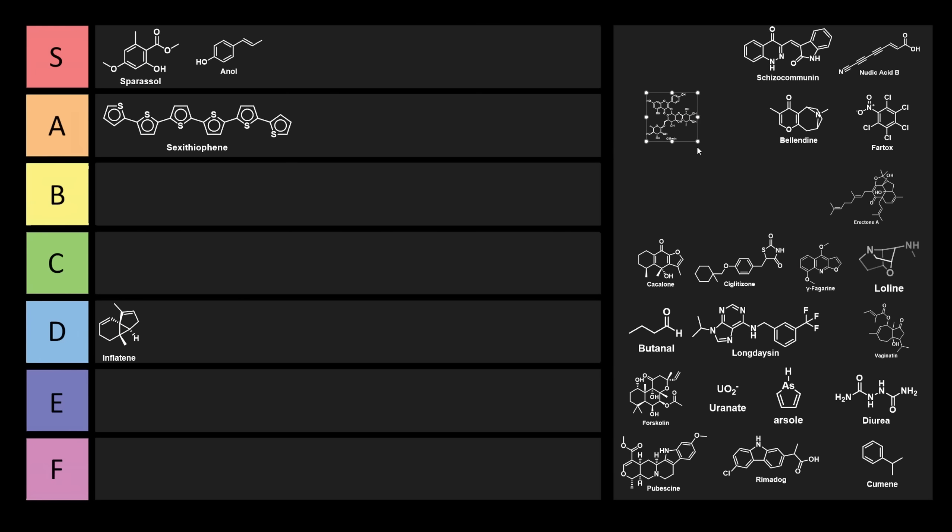Now why don't we look at another one called clitorin. Clitorin is an interesting one. You can see that this is like a trisaccharide unit connected to this interesting tricyclic species. Clitorin is found in the plant Clitoria ternatia. So clitorin is definitely an interesting molecule. This one was actually pretty hard for me to find. I think this one can go right into A tier.